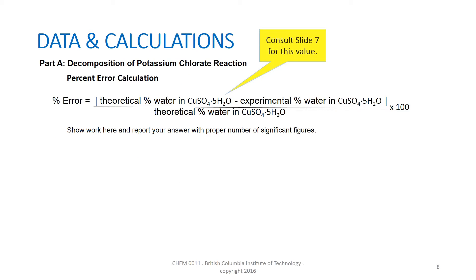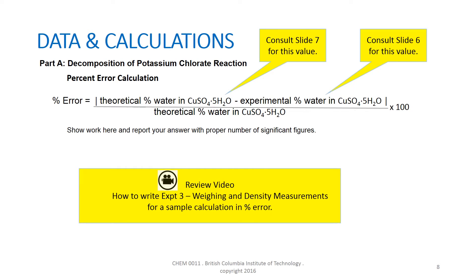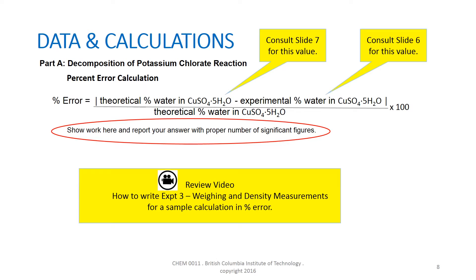The percent error calculation can be carried out using the standard formula. For the theoretical percentage of water in copper sulfate pentahydrate, consult slide 7. For the experimental percentage, consult slide 6. Show your work in the space provided and report your answer with the proper number of significant figures. It may be useful to review the video on how to write experiment 3, weighing and density measurements, for a sample calculation of percent error.